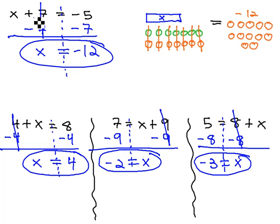To get rid of a positive number hanging out with x, we simply introduce the same number of negatives to both sides, maintaining balance to find the value that x is representing in the problem.